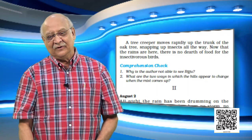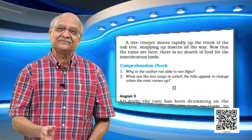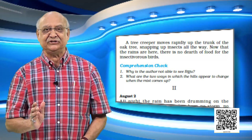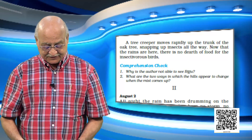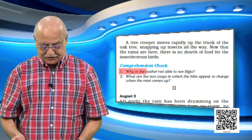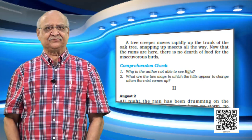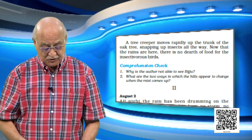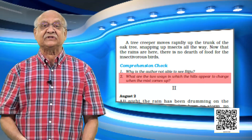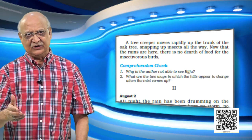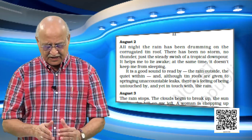Turn the page over. At the top of the next page there is a comprehension check at this stage in part one. Look at the questions: Number one — why is the author not able to see Biju? Because of the mist — he is not able to see Biju at all. Question number two — what are the two ways in which the hills appear to change when the mist comes up? You can look at the text and discuss that with your friends. So we are into nature, monsoon, and we have come to August 2nd in part two.